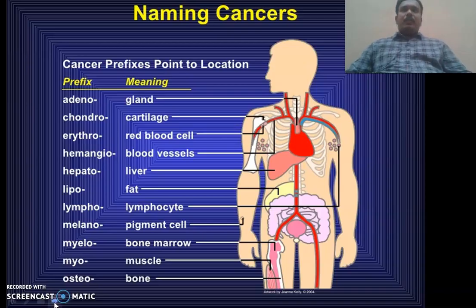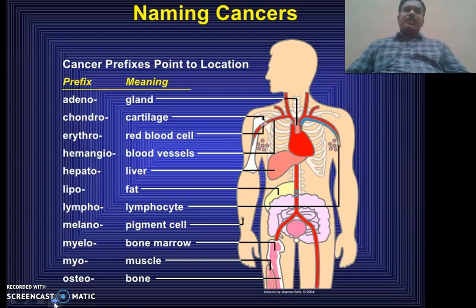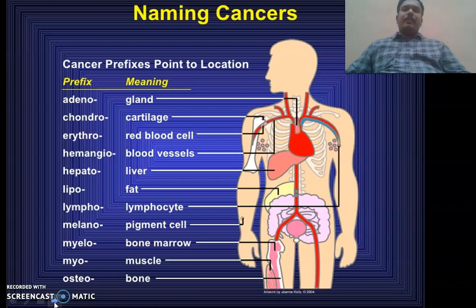Whenever you hear some types of cancer, they will use certain prefix words. If the cancer is related to a gland, we use the prefix 'adeno'; related to cartilage, 'chondro'; red blood cells, 'erythro'; blood vessels, 'hemangio'; liver, 'hepato'; fats, 'lipo'; lymphocytes, 'lympho'; pigment cells, 'melano'; bone marrow, 'myelo'; muscles, 'myo'; and bone, 'osteo'.